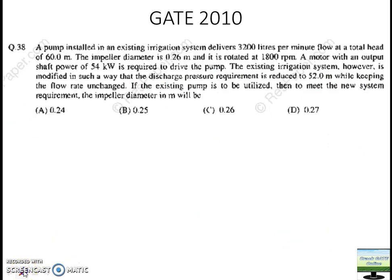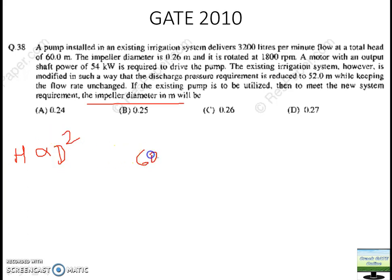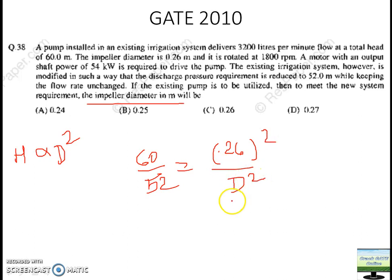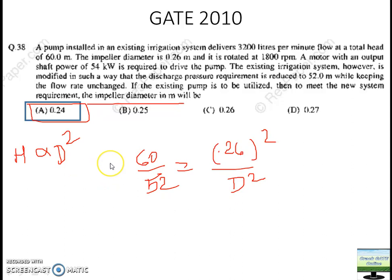Let's look at the 2010 question — please pause and read it. The question looks bulky and difficult but using affinity law you can solve it simply. They are asking the impeller diameter when head changes from 60 to 50 meters. Since H ∝ D², we write: 60/50 = (0.26)²/D². Solving gives D = 0.24 meters. Affinity laws are easy to understand, easy to solve, and questions regularly come from here.